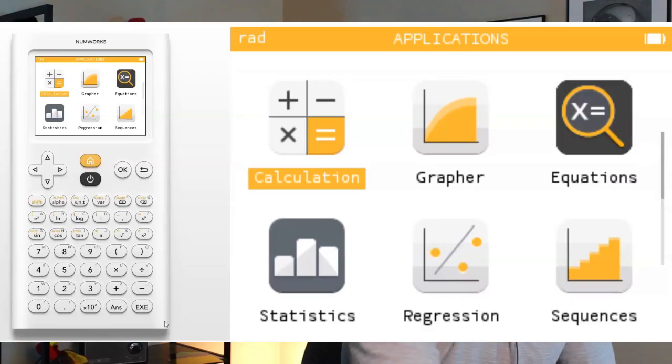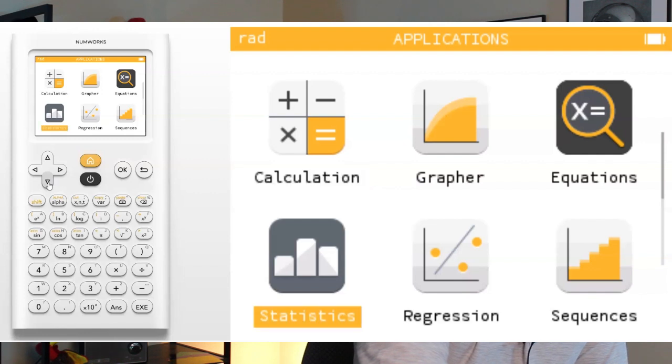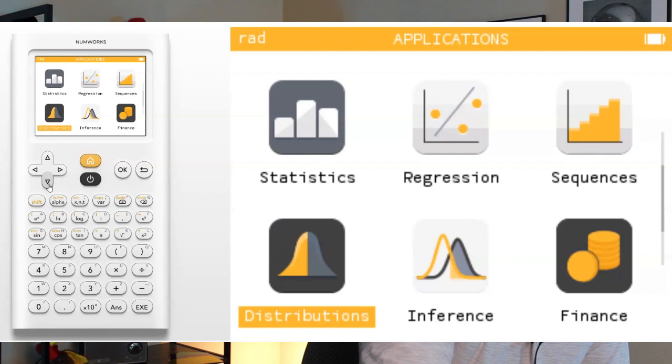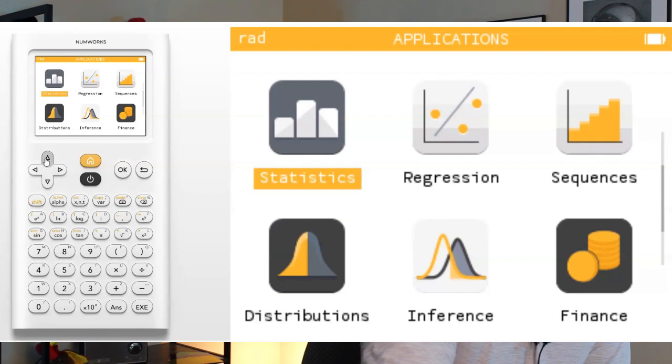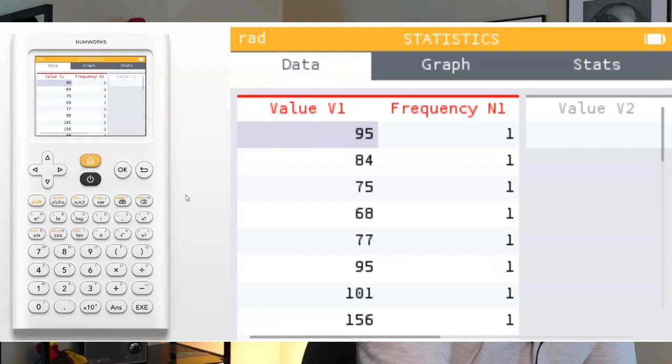So when you open up the calculator, you'll see that it has apps, just like your cell phone would have. And you're just going to move the cursor to the apps you want. The big app that we're going to use is Statistics. We're also going to use the Regression app, and there's one down below for Distributions and Inference. But right now, we're just going to go to Statistics. Click OK or Execute. Now, the first thing you want to do here is actually enter in some data. So what I did was I went ahead and had some teachers at my high school do an obstacle course, and I recorded the time in seconds it took them to complete that obstacle course.